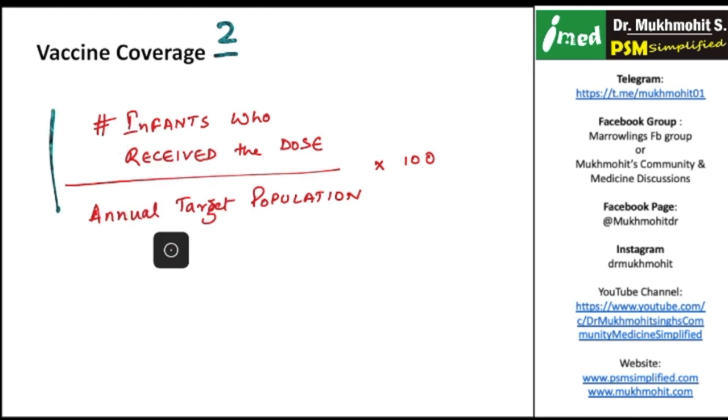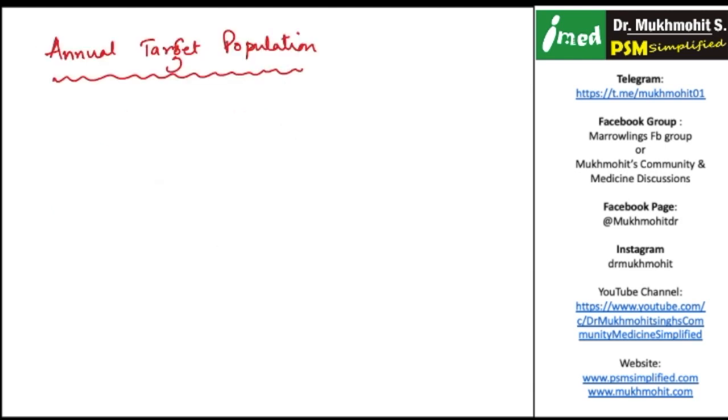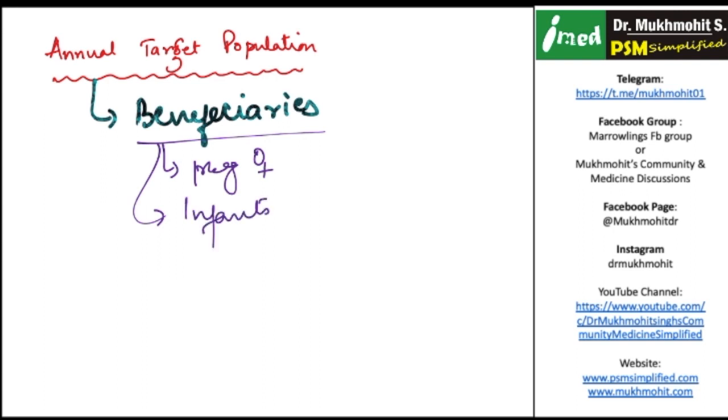Sometimes you need to find out the annual target population, which is an important and conceptual topic. How to find out the annual target population, that is the eligible number of beneficiaries under the program for that particular year? The beneficiaries could either be the pregnant females where you want to give them the tetanus and diphtheria toxoid vaccine, or they could be the infants to whom you are going to give the pentavalent or the measles rubella vaccine, or it could also be the number of live births where you are concerned for giving them the BCG vaccine.